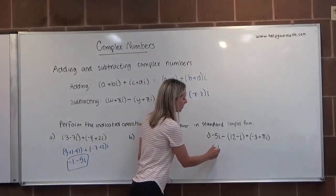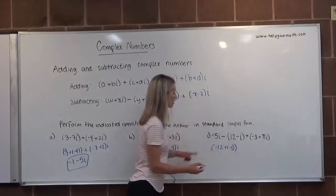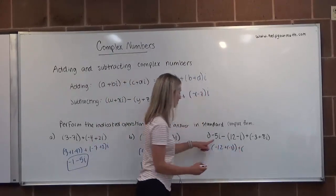I'm going to start with my real parts. It's going to be minus 12 and minus 3. I only have 2 real parts because this first number didn't have a real part. And then I should have 3 complex parts.